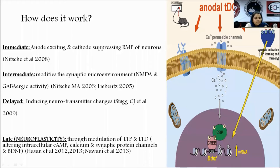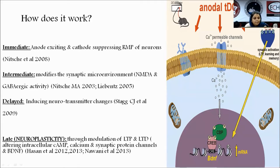What are the intermediate effects? It modifies the synaptic microenvironment, due to NMDA and GABA activity. Delayed effects or neurotransmitter changes occur in the synapse. The late effect is neuroplasticity — the ability to reform as well as formation of synaptic connections secondary to lifetime experiences, learning, or injury. This happens either by long-term potentiation or long-term depression.